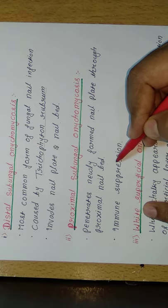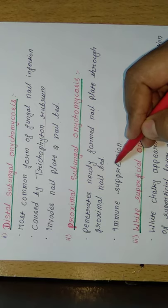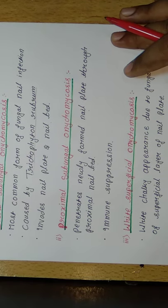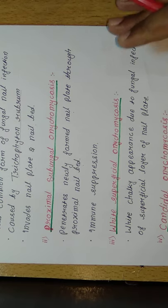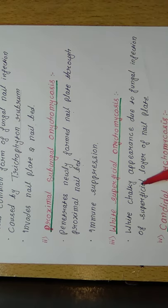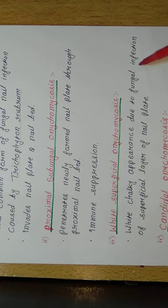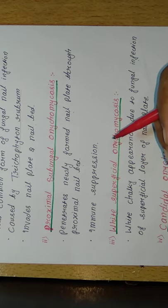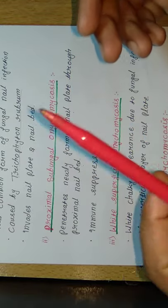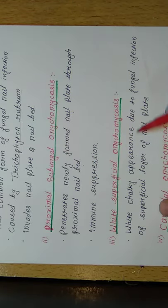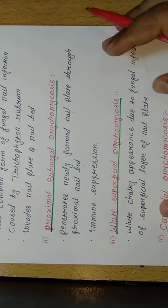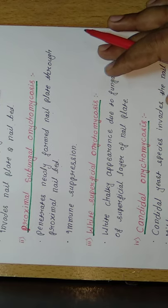Proximal subungal onychomycosis occurs mostly in immunocompromised patients. The third subtype is white superficial onychomycosis. In white superficial onychomycosis, the fungal infection appears as white chalky spots on the superficial layer of the nail plate.